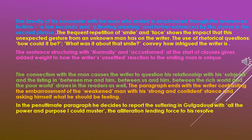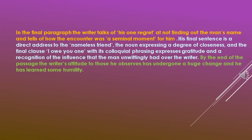The connection with the man causes the writer to question his relationship with his subjects, and the listing — 'between me and him,' 'between us and him,' 'between the rich world and the poor world' — draws in the readers as well. The paragraph ends with the writer contrasting the embarrassment of the weakened man with his own strong and confident stance, asking himself what he should be feeling. In the penultimate paragraph, he decides to report from Garodud with all the 'power and promise' that he could muster, the alliteration lending force to his resolve.